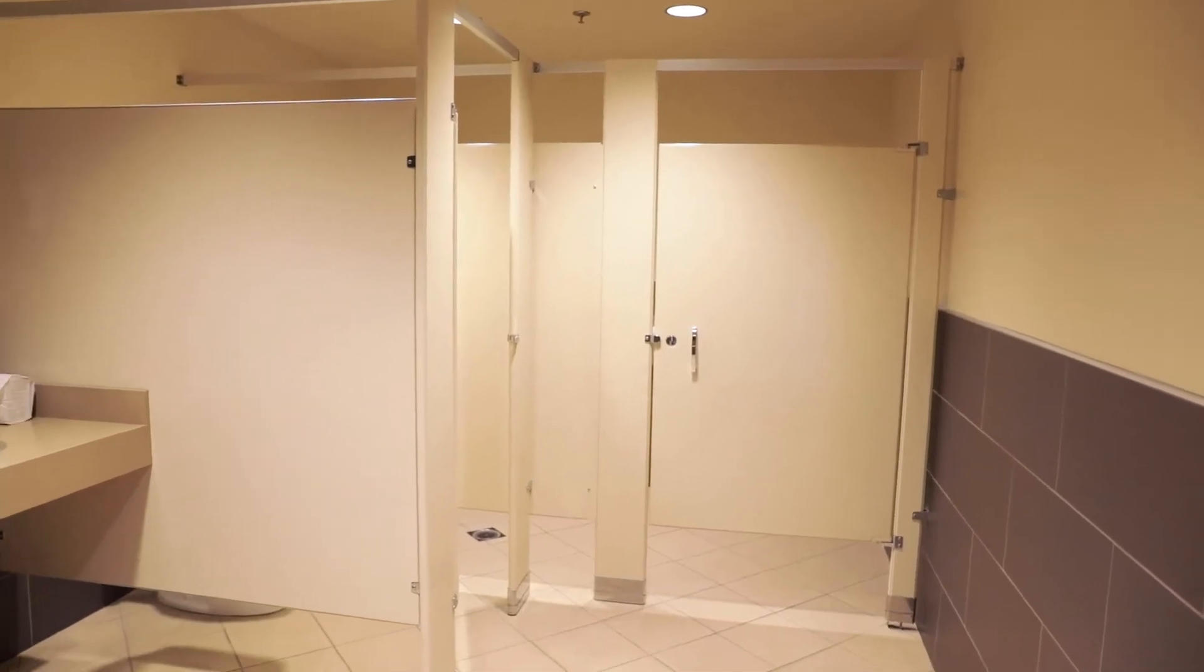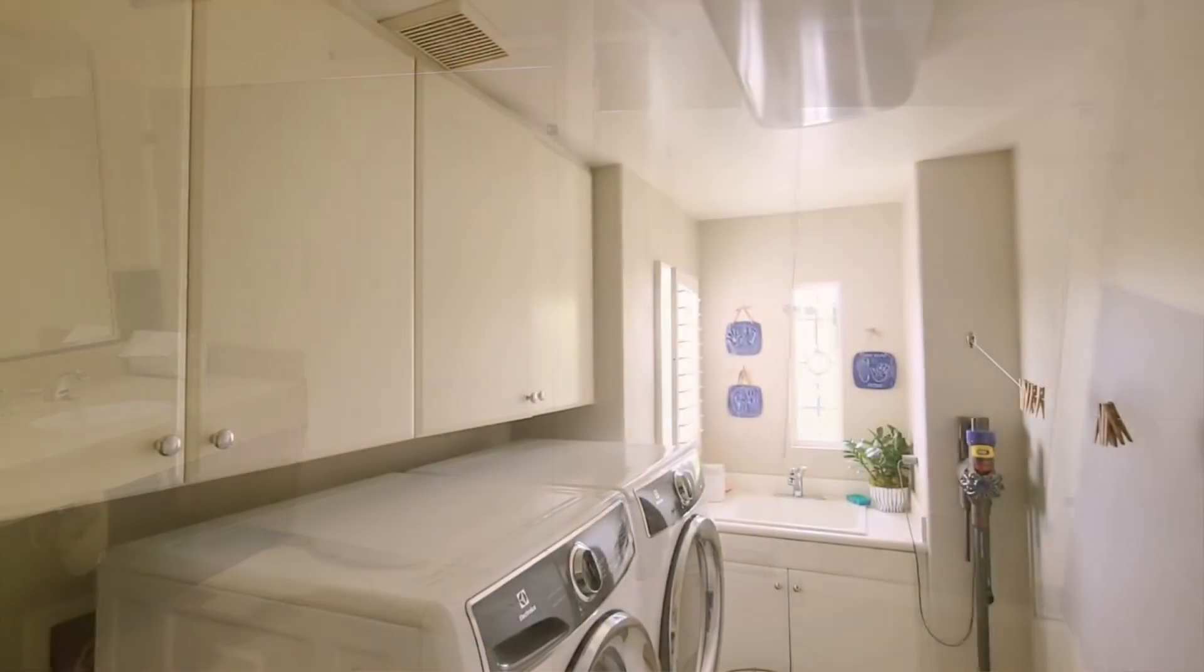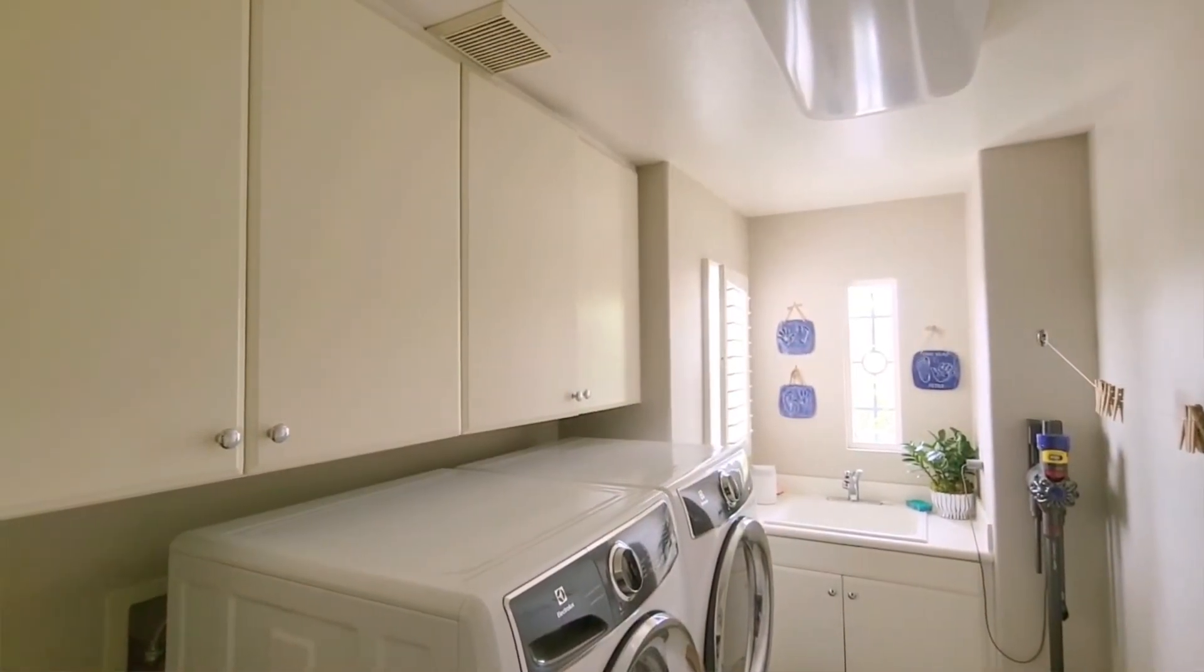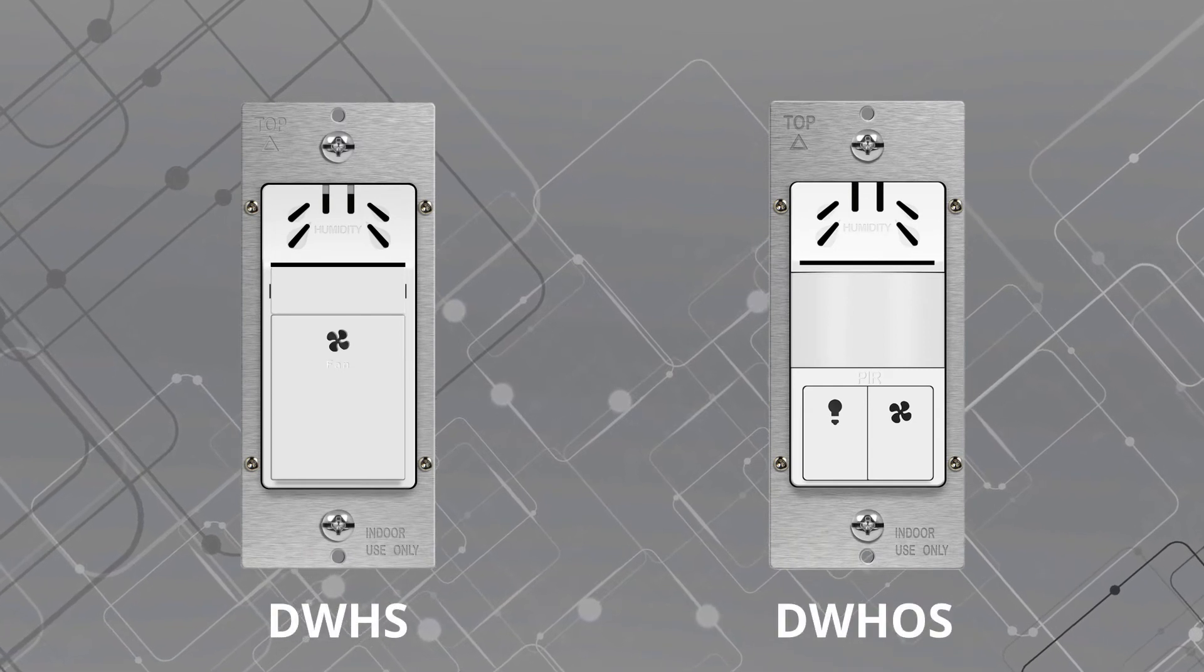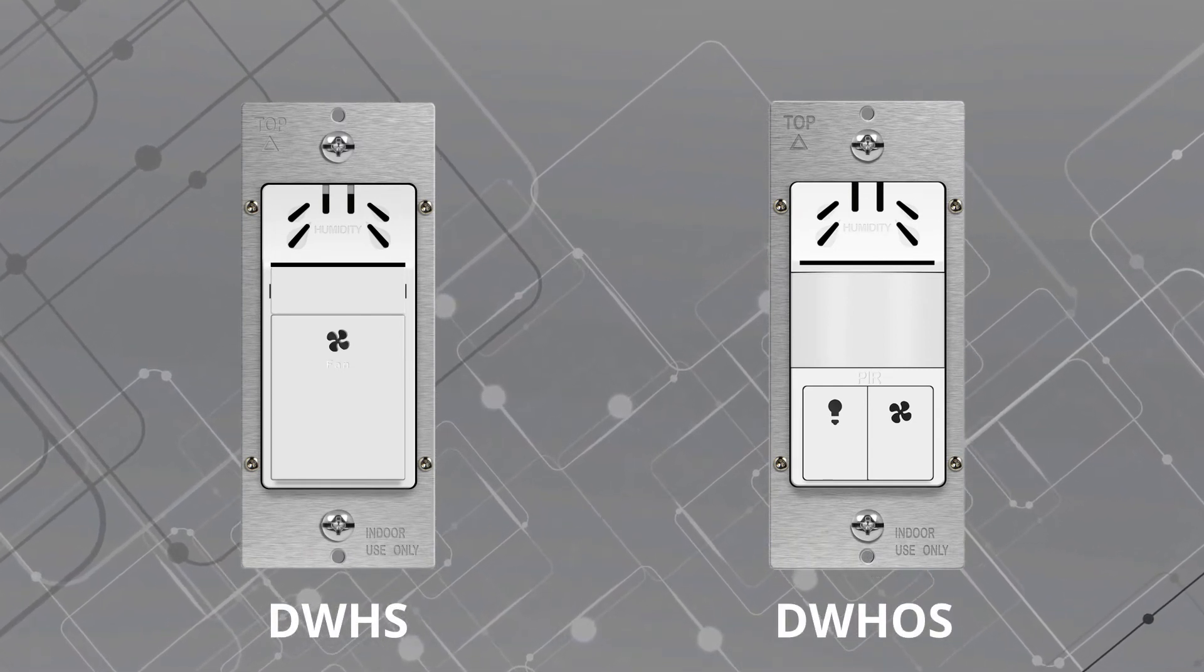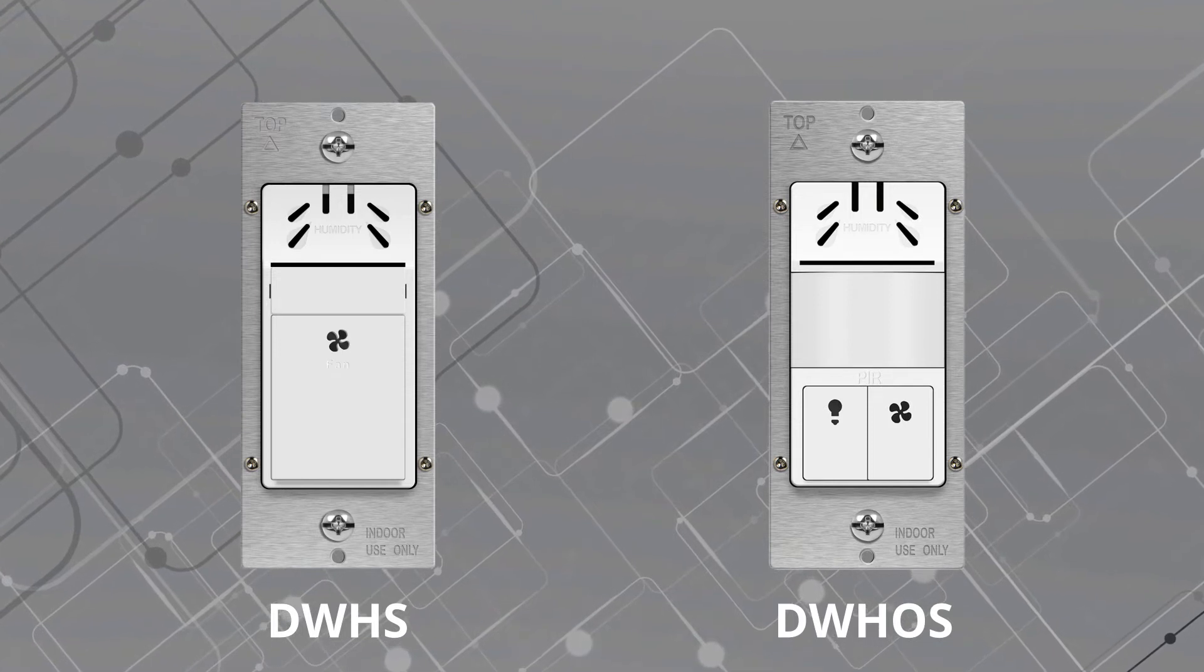Automatically reduce humidity and condensation in moisture-prone areas with Enerlite's in-wall humidity sensors. These devices help maintain a clean, safe, and comfortable space by monitoring moisture levels and automating ventilation controls.